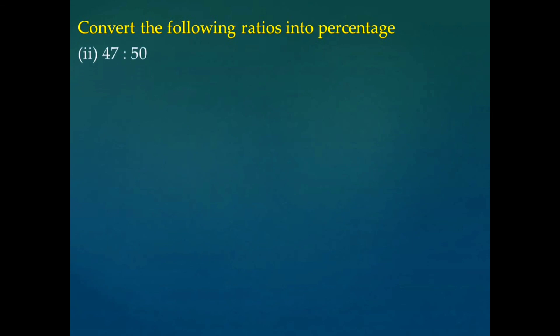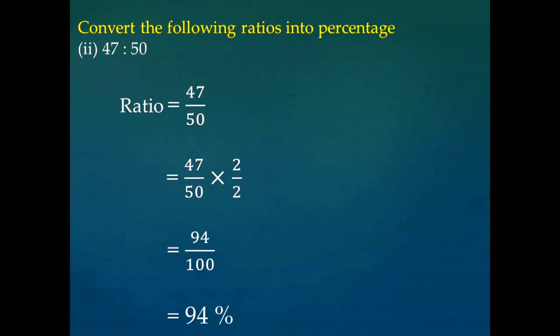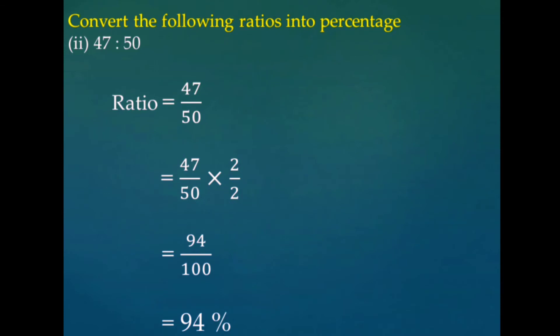Let us have another problem: 47 is to 50. If we convert it into a ratio, it will be 47 divided by 50. To convert this ratio into percentage, we have to convert the second term into 100, so we multiply by 2. We multiply both terms by 2, giving 47 into 2 is 94, divided by 50 into 2 is 100. So we get 94 divided by 100, that is 94%.